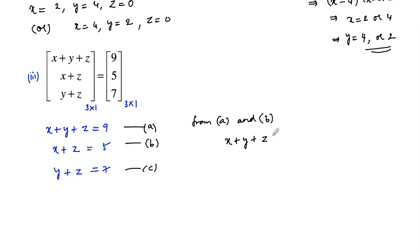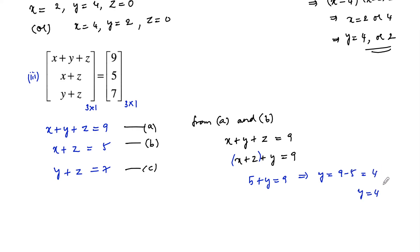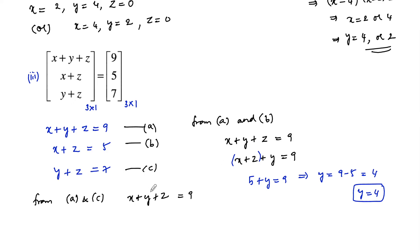From the first equation, x plus y plus z is equal to 9, we can write x plus z plus y is equal to 9. Since x plus z is equal to 5 from the second equation, substituting gives 5 plus y is equal to 9, which implies y is equal to 9 minus 5, that is 4. So y is equal to 4. Similarly, from the first and third equations, x plus (y plus z) is equal to 9 and y plus z is equal to 7, so x plus 7 is equal to 9, which implies x is equal to 2.